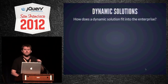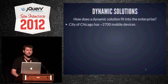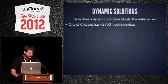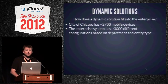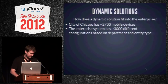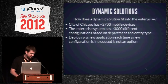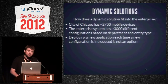The city of Chicago has approximately 2,700 mobile devices of many different types — Blackberries, Androids, iPhones, feature phones, tablets, and Toughbooks. Any mobile solution we provide needs to run on many of these device types. The enterprise system also has approximately 3,000 different configurations based on department and entity type, so we have to support different devices and all the different configurations. It would be impossible to redeploy a solution every time configurations are changed or added, so the answer to the problem is a dynamic solution.